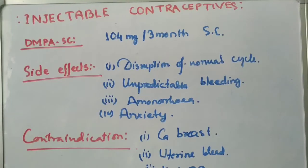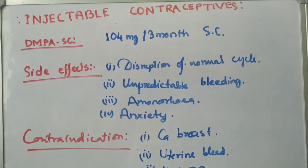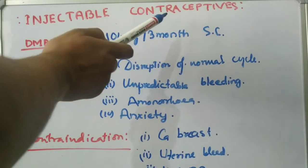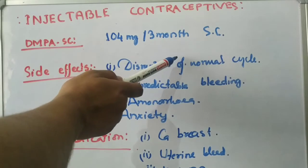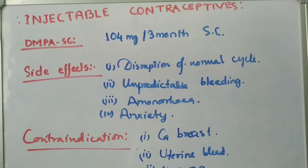Now we will see DMPA Subcutaneous. DMPA subcutaneous is given at 104 mg per 3 months subcutaneously. The mechanism of action is the same as intramuscular DMPA.